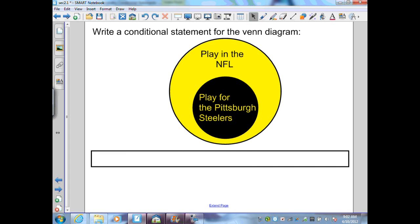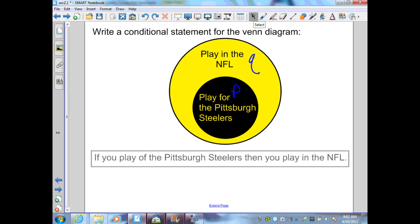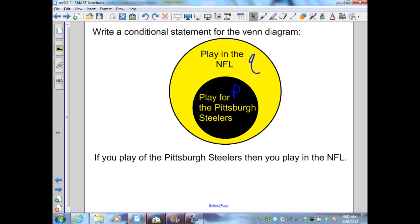Here we're given a Venn diagram and asked to write a conditional statement based on it. From the diagram, 'play for the Steelers' is P, our hypothesis, while 'playing in the NFL' is Q, our conclusion. With P and Q identified, we write: 'if you play for the Pittsburgh Steelers, then you play in the NFL.'